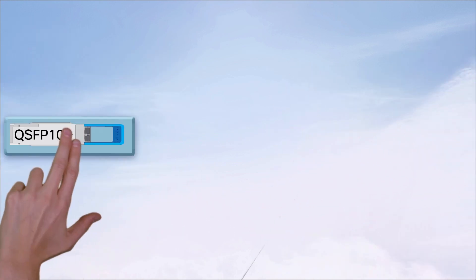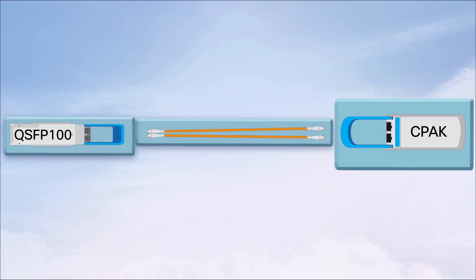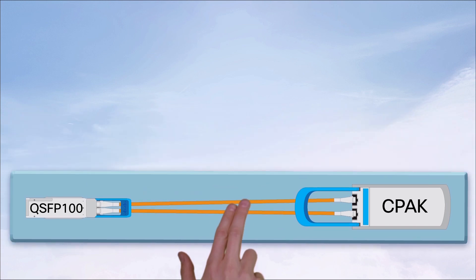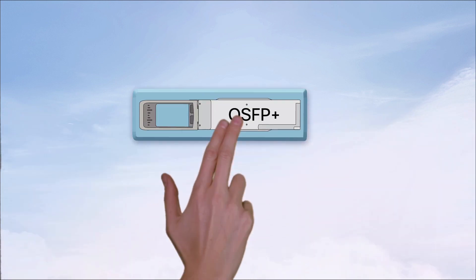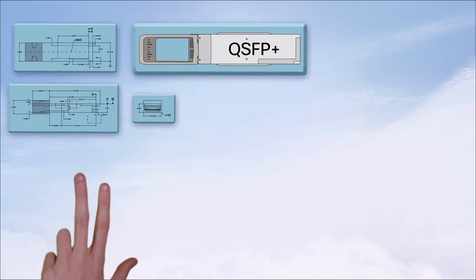Now these transceivers can be different shapes and can speak different languages. And if they speak the same language, they can talk to each other, even if they're different shapes. That's why pluggable transceivers are standardized.